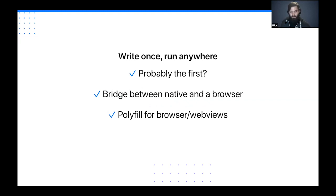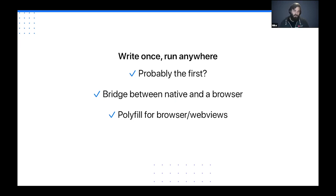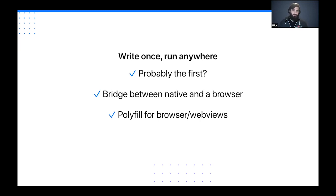Cordova's mantra is a "write once, run anywhere" philosophy — you should be able to take a web app written in JavaScript and deploy it to iOS, Android, BlackBerry, Tizen, WebOS, and all the various platforms they supported, and it should operate the same way. As far as I know, Cordova iOS dates back to 2008, roughly after the first SDK was released.